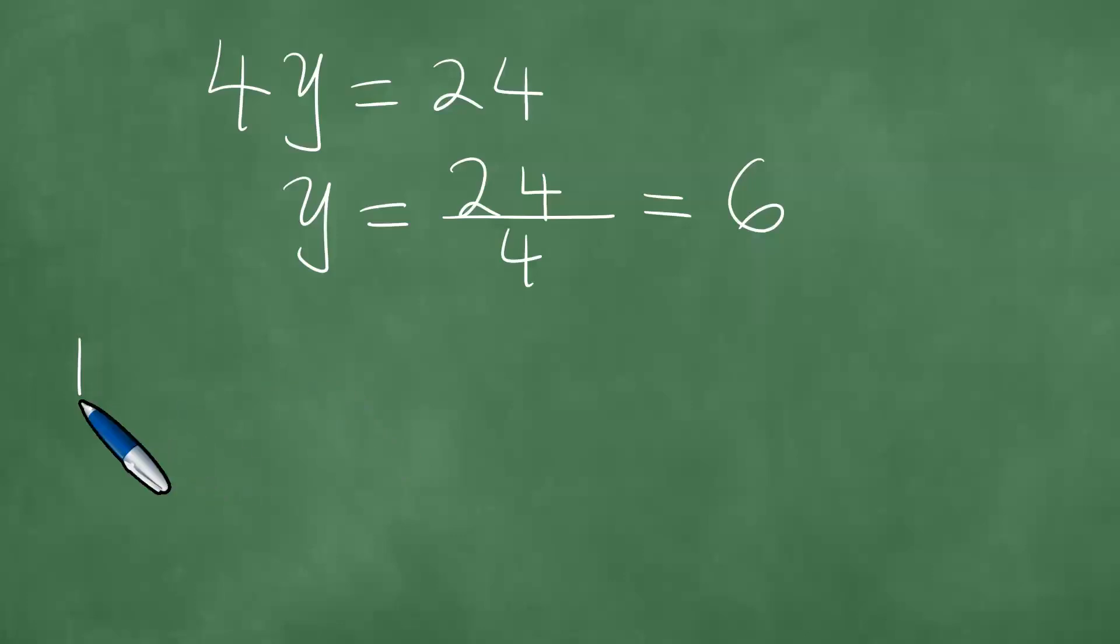If this is the case, that 4y equals 24, we can divide both left and right by 4, so that y is equal to 24 divided by 4, and the result is 6. Hence, y equals 6.